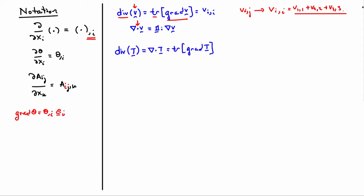We also encounter the divergence of tensor fields, div of T. Lots of different notations are used - nabla dot T is pretty common. The definition is the trace of the gradient of T. Written out, it's Tij comma j ei.